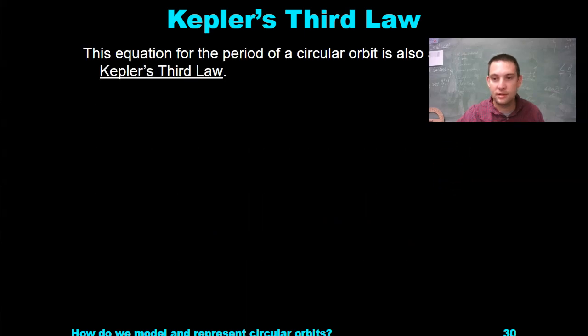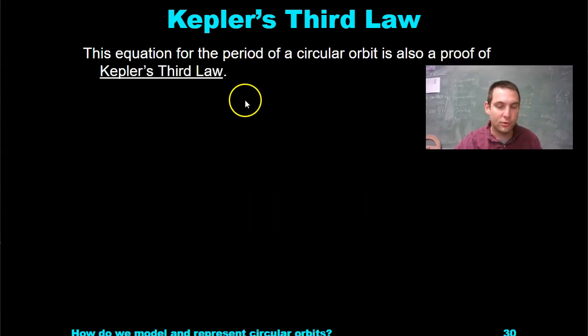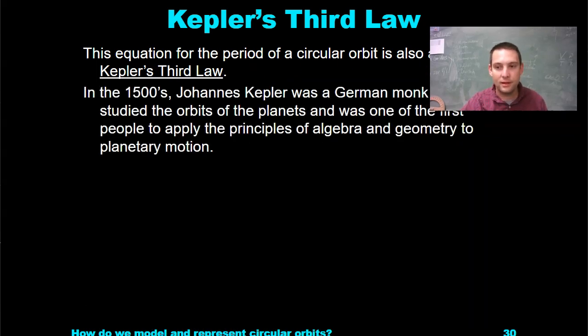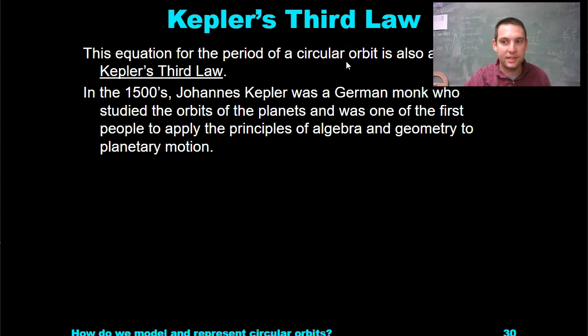Kepler's third law has a proof, which is the period of a circular orbit. That's the equation that we just did in case you forgot, back in 10.2. You may want to revisit that. We'll do it again.